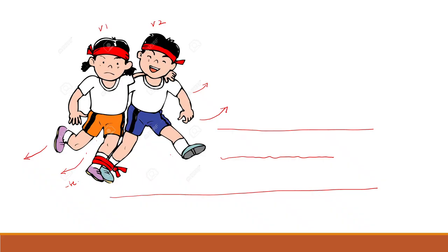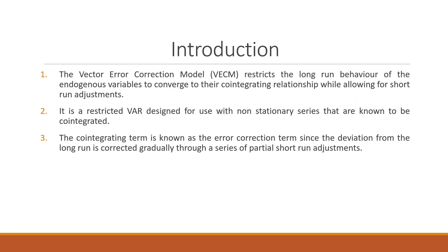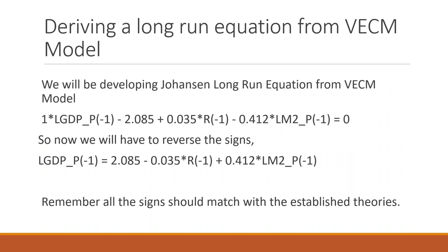Let us go back. These students must be running the race and there will be multiple times that they are moving out and correction is happening. So there will be multiple occasions where correction is needed. These are all short-run adjustments needed for establishing a long-run relationship. So VECM is a restricted VAR designed for use with non-stationary series that are known to be co-integrated. The co-integrating term is known as the error correction term, since the deviation from the long-run is corrected gradually through a series of partial short-run adjustments.